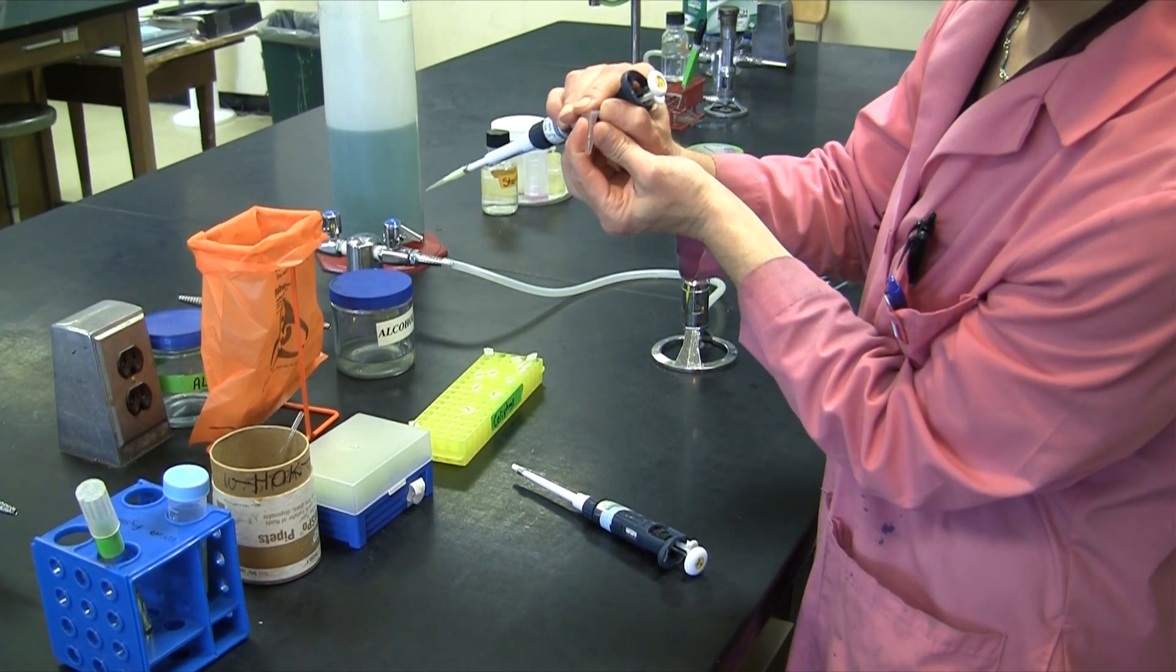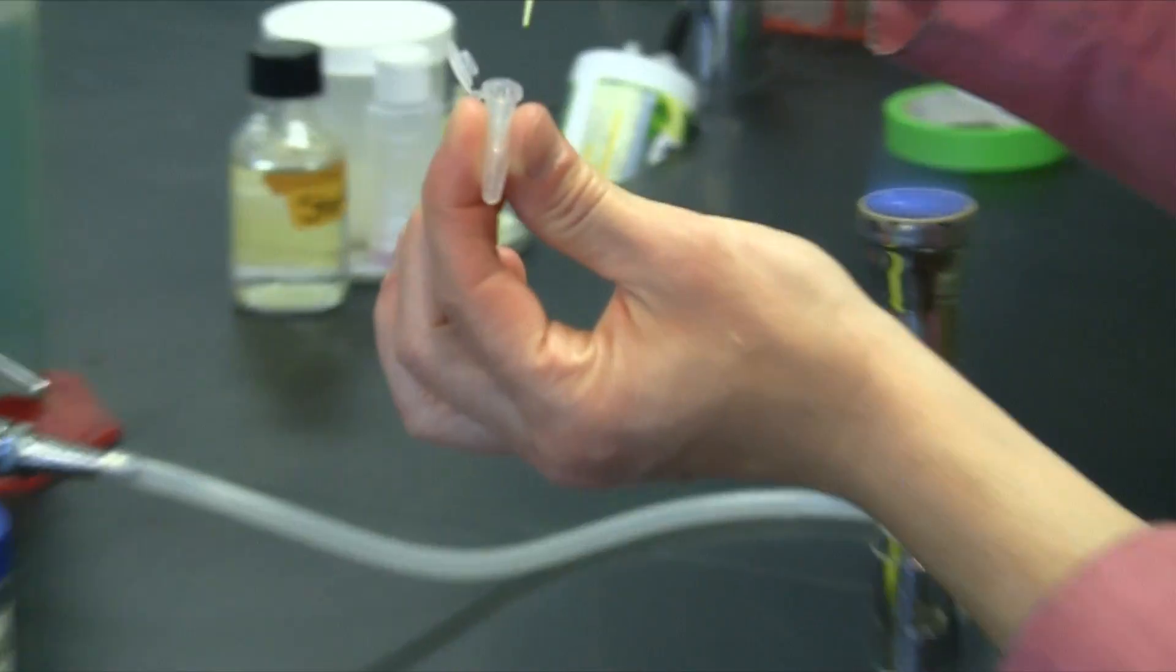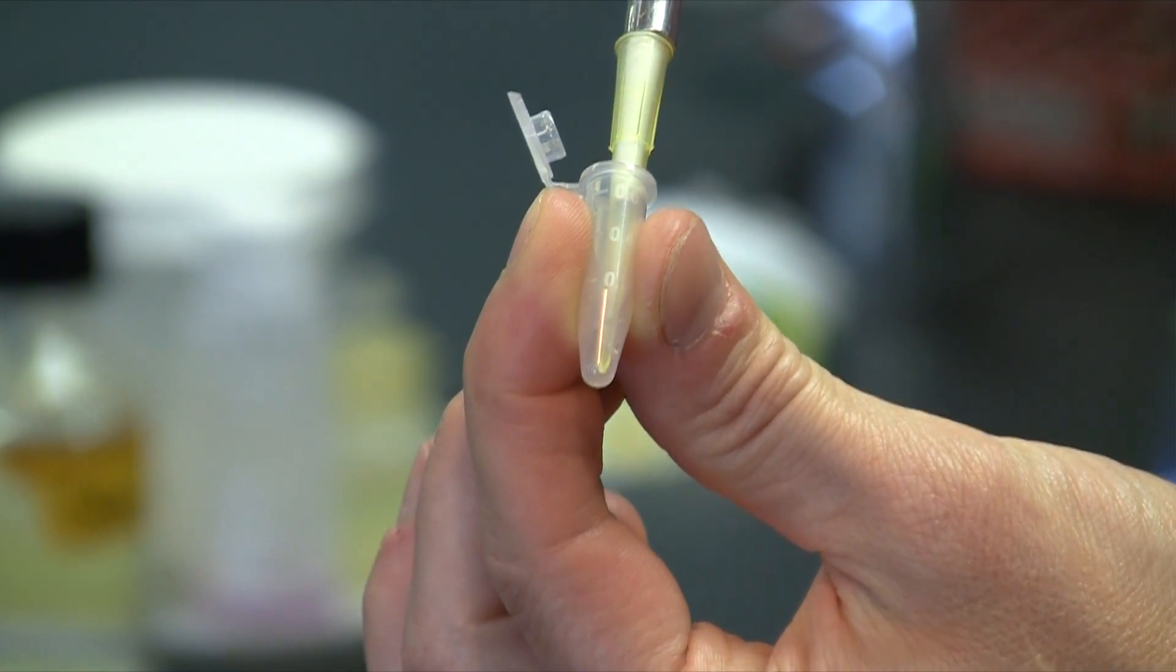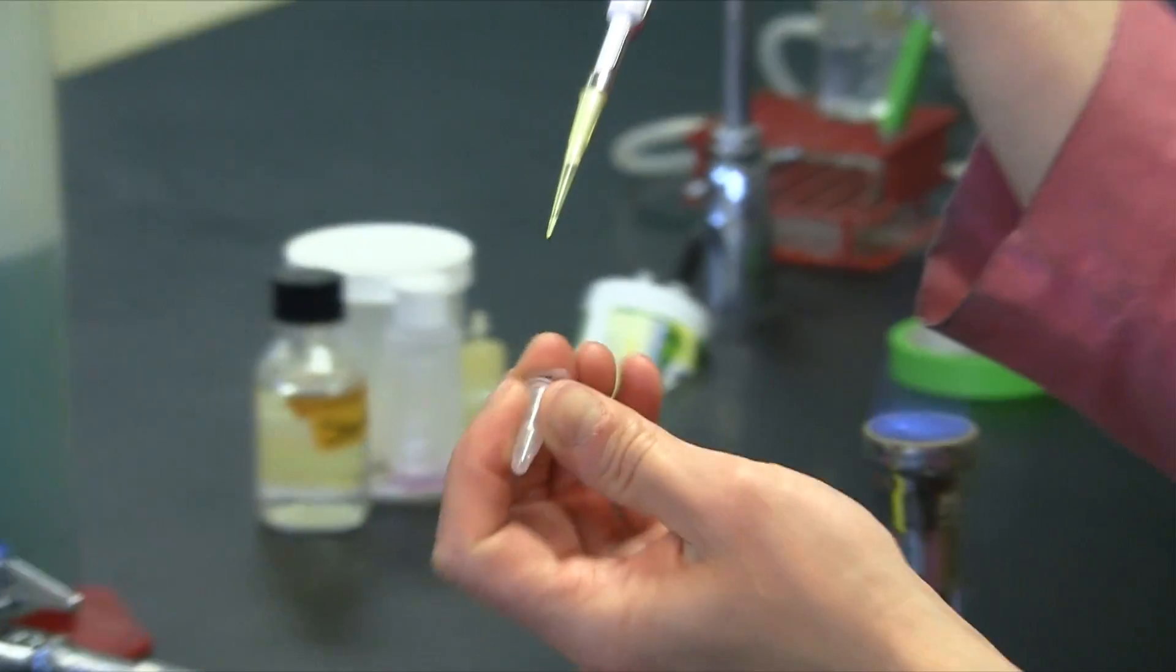Go ahead and tap your epitube down just a bit to make sure that the filtered sewage is on the bottom of the tube. And go ahead and take your 5 microliters.